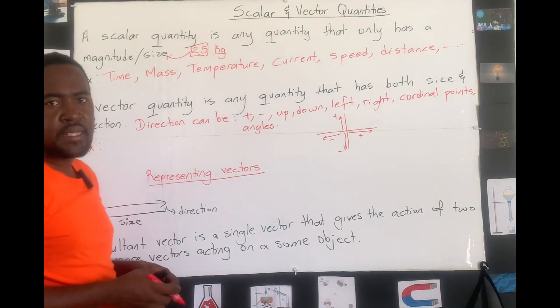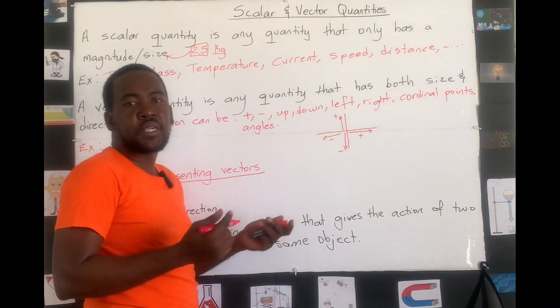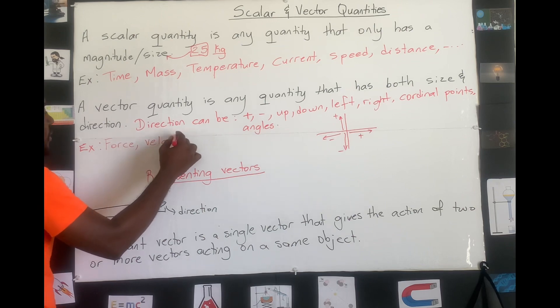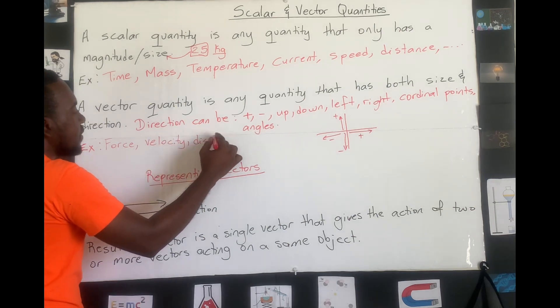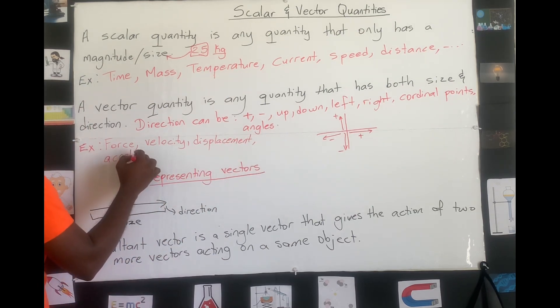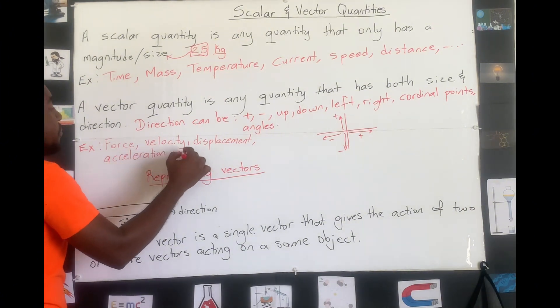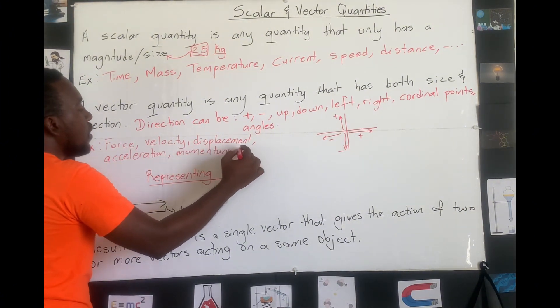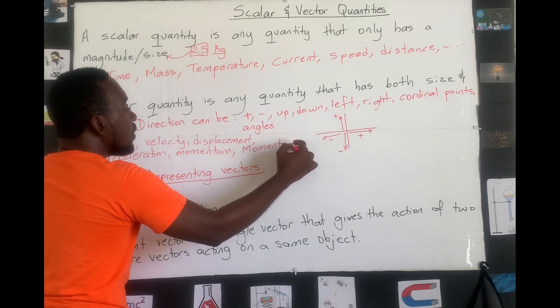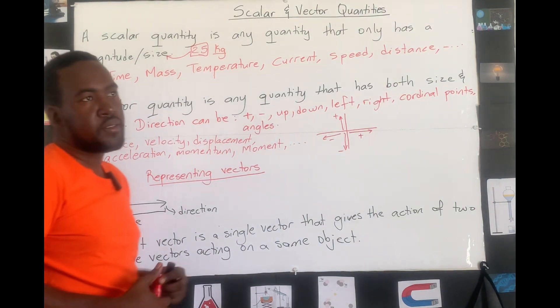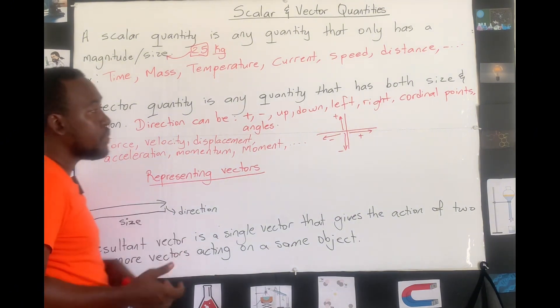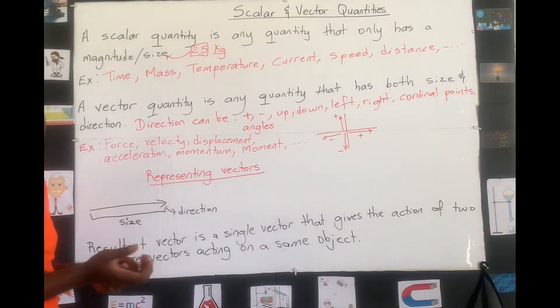What are some quantities that we need to show the direction for? Primary force, velocity, displacement, acceleration, momentum, moment, these are some quantities that are strictly vector. We have to tell what direction it is. Other from the size of it, we have to give what their direction is.